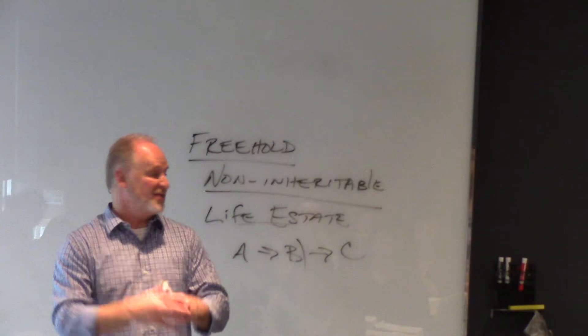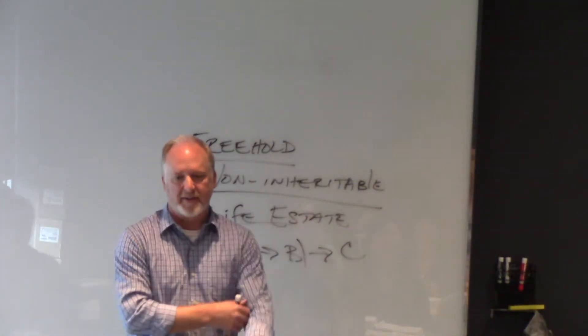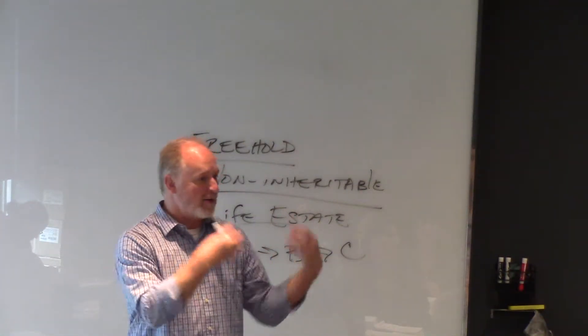That's the key, is that it actually changes to a different estate when it gets to C. You've got remainder, reversion, you know how they apply?